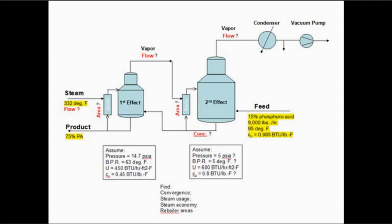In this example, a feed stream consisting of 15% phosphoric acid is to be concentrated to 75%, utilizing double-effect evaporation. As shown, the feed flow rate is 9,000 pounds per hour at 95 degrees Fahrenheit. The energy source is steam at 332 degrees Fahrenheit. We wish to know how much steam will be required, the efficiency of the steam usage, the concentration of acid in the second effect, and the pressure in each effect.